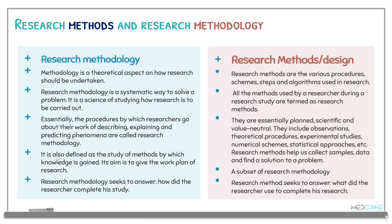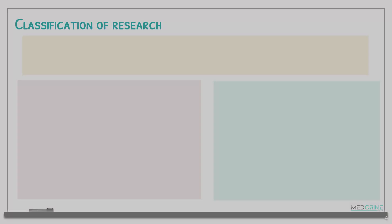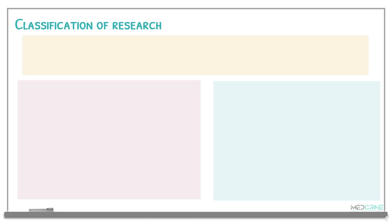Having understood that, let's move on to classify research. We can classify research into eight types. Let's have a look at basic research and applied research.